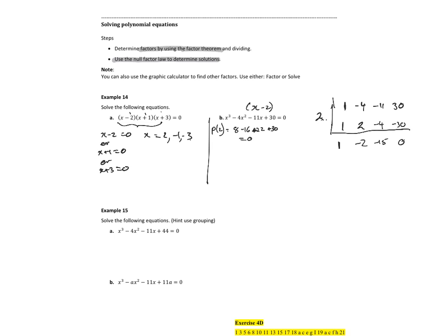So there's my 1. So that means my factors, x squared minus 2x minus 15. So if I solve that, I get x minus 5 times x plus 3. My original factor was x minus 2. So if I want to solve this equal to zero, it means that x is equal to 2, 5, and negative 3.